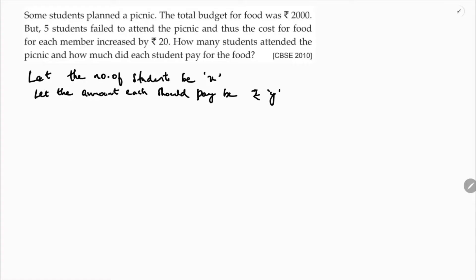According to the given condition, the number of students is x and each will pay y rupees, so the total amount will be xy = 2000. This is equation one.